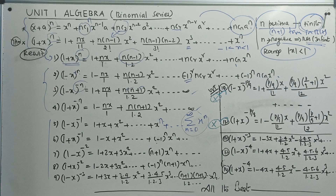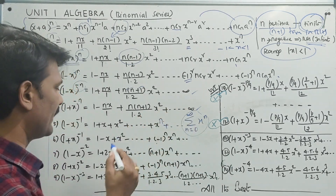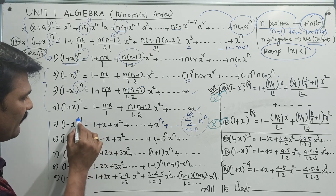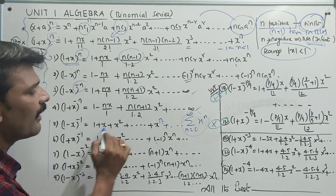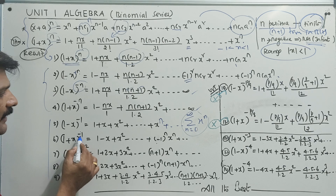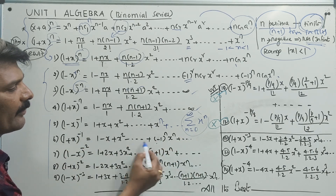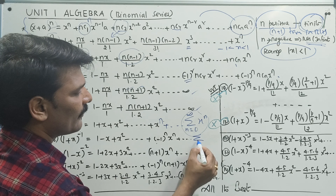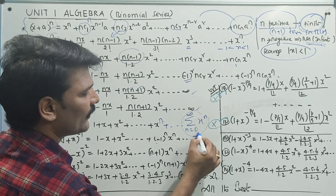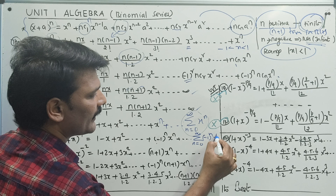We will go to the summation: n equals 0 to infinity of x power n. The answer is 1 plus x plus x squared, and so on — that is, power of 1 with infinite terms. The general term is summation n equals 0 to infinity of minus 1 whole power n, into x power n.